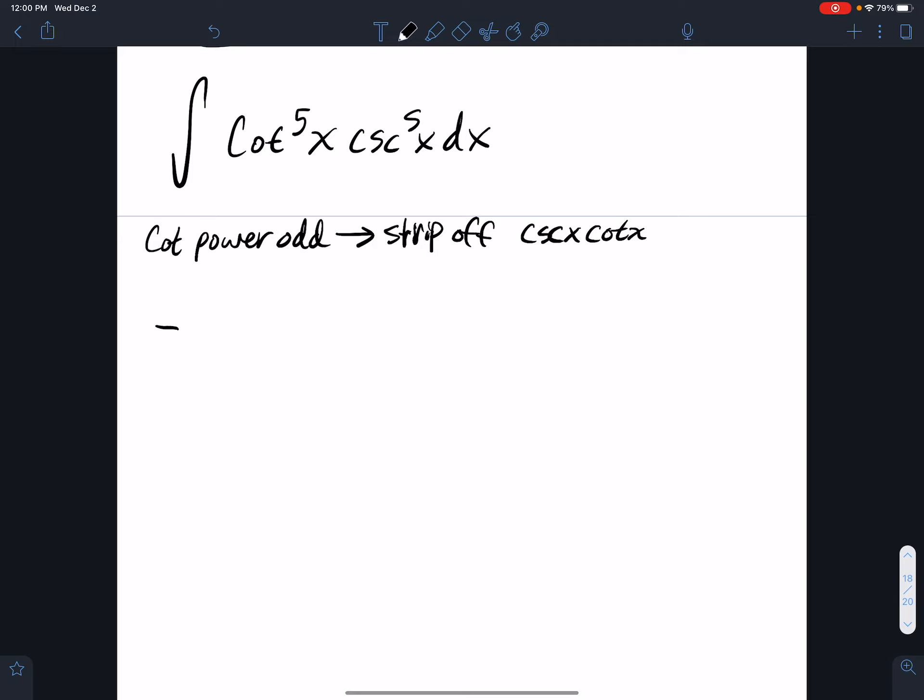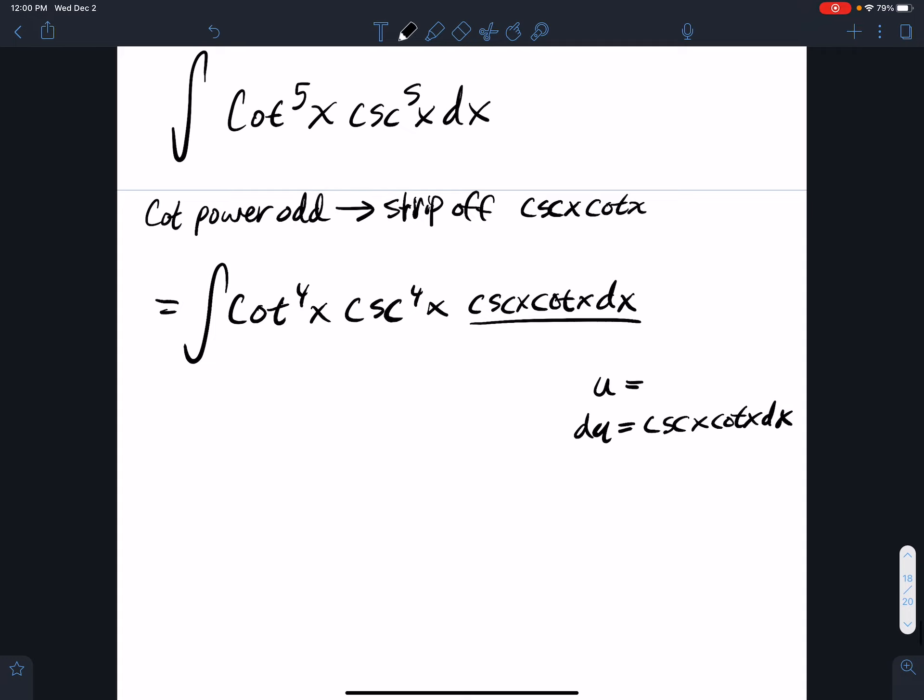And so what that does, that will give me cotangent to the fourth x cosecant to the fourth x cosecant x cotangent x dx. Why is that good? Well that's going to give me if I have a du equal to cosecant x cotangent x, well if I use cosecant for my u that will get me that derivative there, the negative of it.